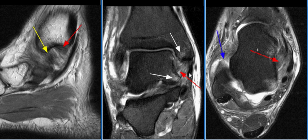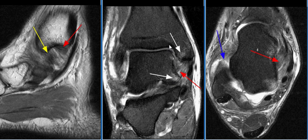There is edema within the anterior and posterior tibiotalar ligaments, as seen on these images with red arrows. The anterior superficial fibers of the deltoid ligament are intact. There is reactive edema within the medial malleolus and medial talus at the deltoid ligament attachment sites, as indicated by white arrows.